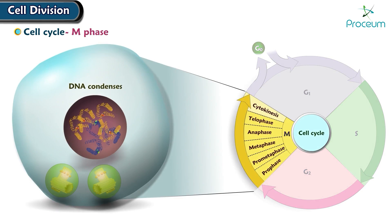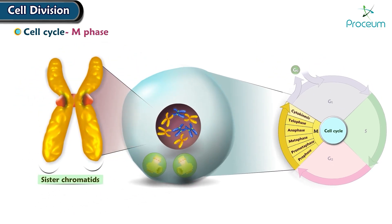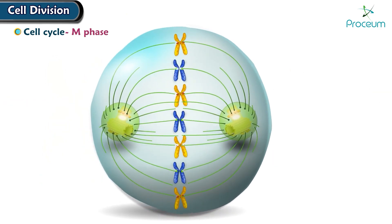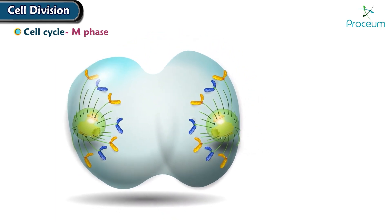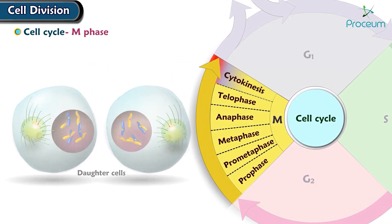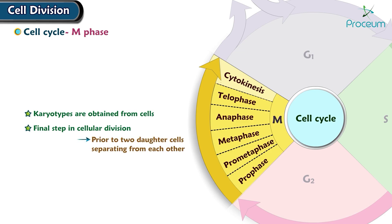M phase: The DNA condenses to form visible pairs of sister chromatids attached at the centromere, which are subsequently separated and moved to opposite poles of the cell. After the M phase, the cell splits into two daughter cells in a process called cytokinesis. Karyotypes are obtained from cells in the M phase. Mitosis is the final step in cellular division prior to the two daughter cells separating from one another, and it has four stages.